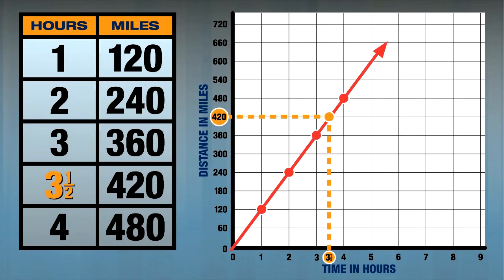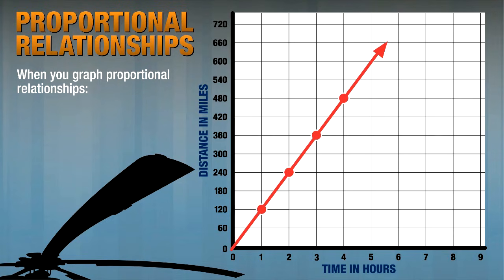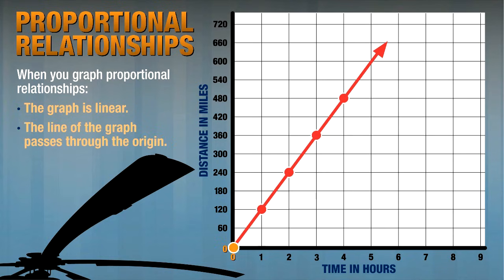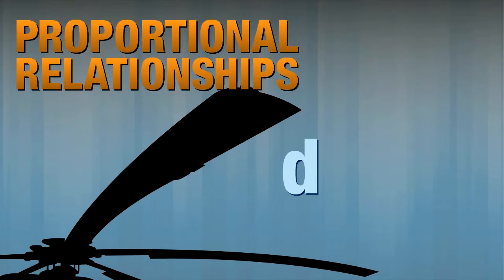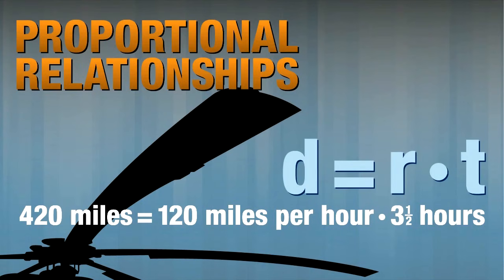Now that we've found the answer, let's look at some characteristics of our graph — these are true of all graphs of proportional relationships. The graph is linear, meaning it results in a straight line. The line also passes through the origin, or (0, 0), which makes sense because in zero hours the helicopter would travel zero miles. The slope of the line is the constant of proportionality — in this case, the rate of 120 miles per hour. We can express this relationship using the equation D equals r multiplied by t, where D is distance, r is rate, and t is time. The equation confirms our answer is correct.